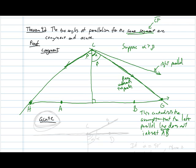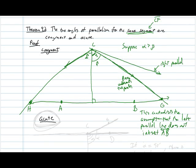That's a contradiction because by definition the left parallel line is not supposed to intersect AB. We showed that if the right angle of parallelism is bigger than the left angle of parallelism, that leads to a contradiction. There's nothing special about assuming the right is bigger than the left — if they are different, we can build this contradiction. If beta happened to be bigger than alpha, we would construct a smaller angle and get the same contradiction on the other side. So these angles have to be congruent. Now we're going to show that they have to be acute.